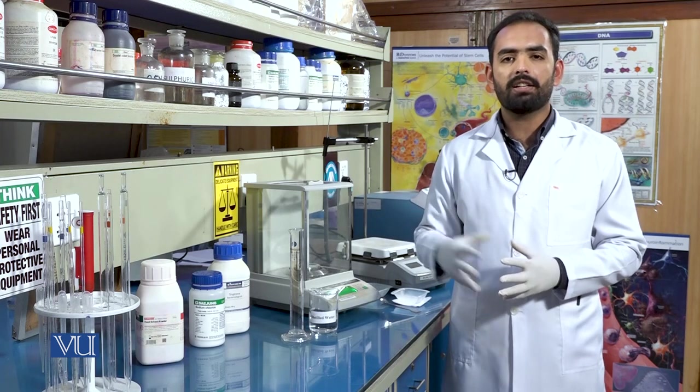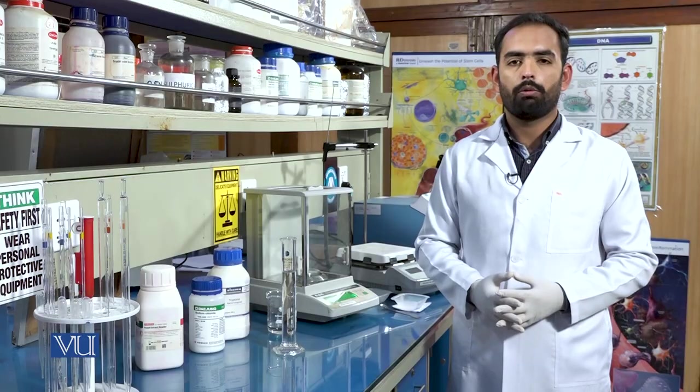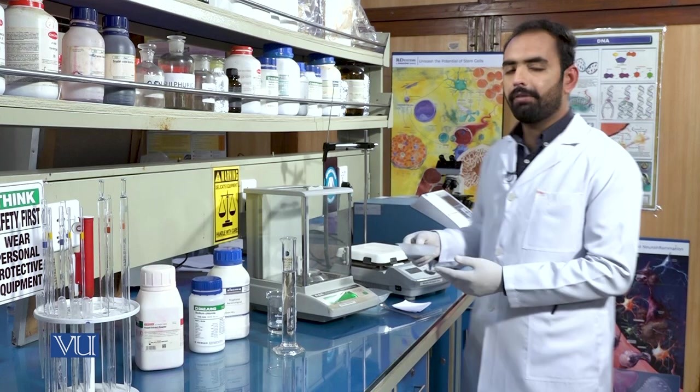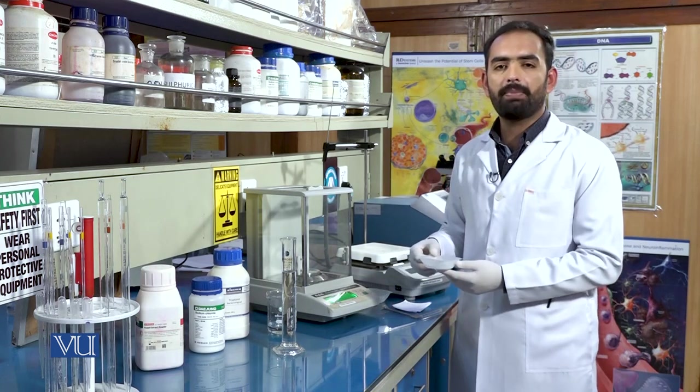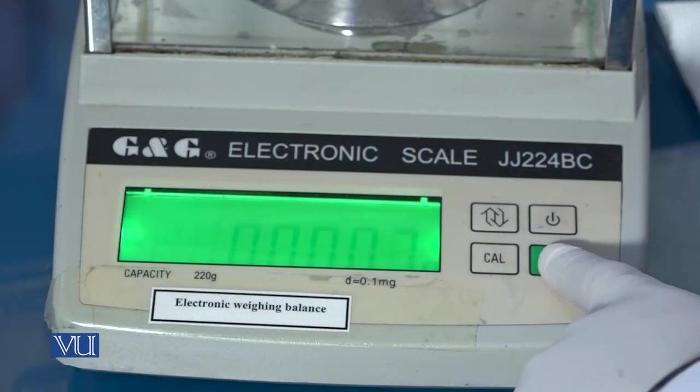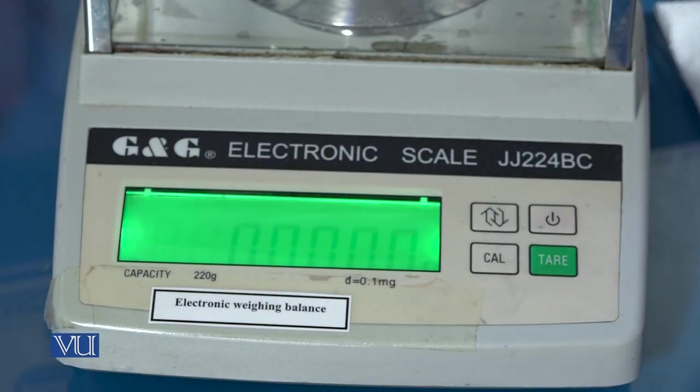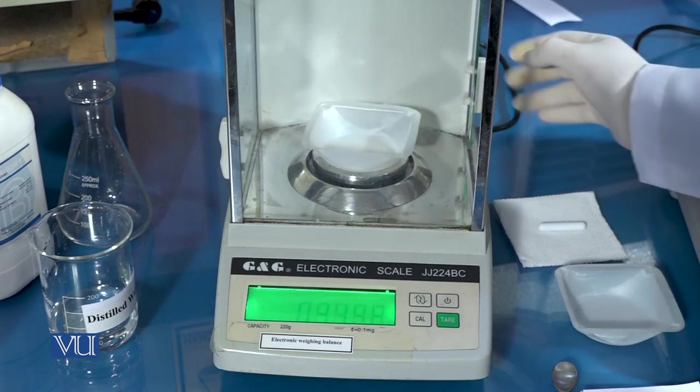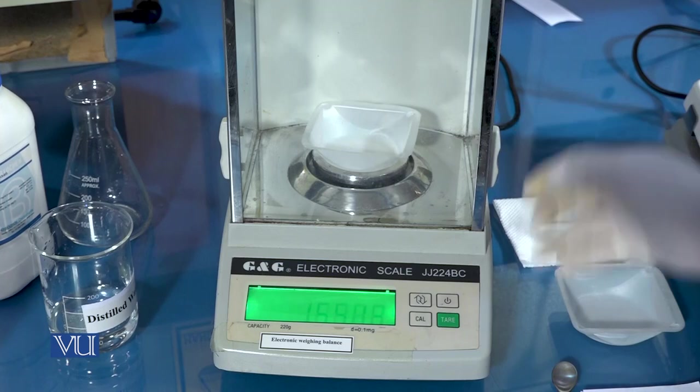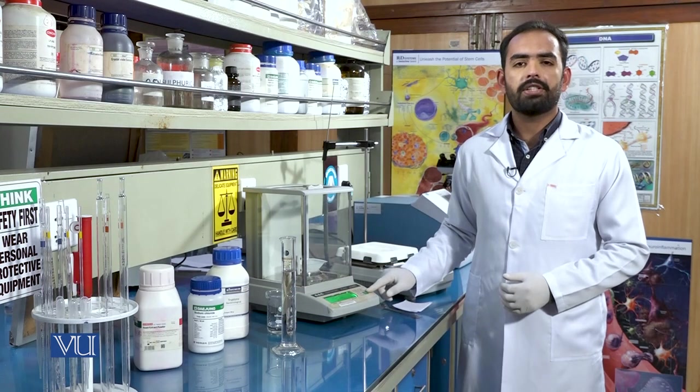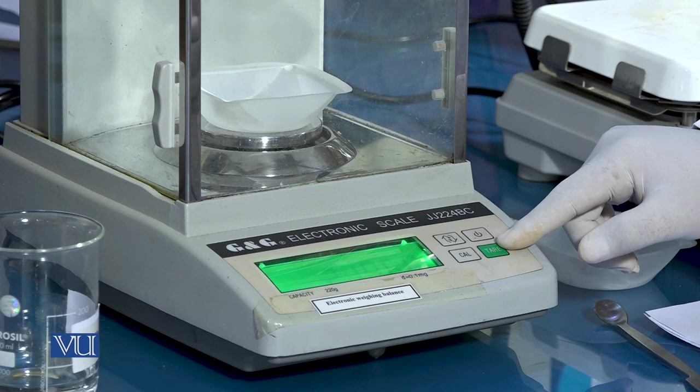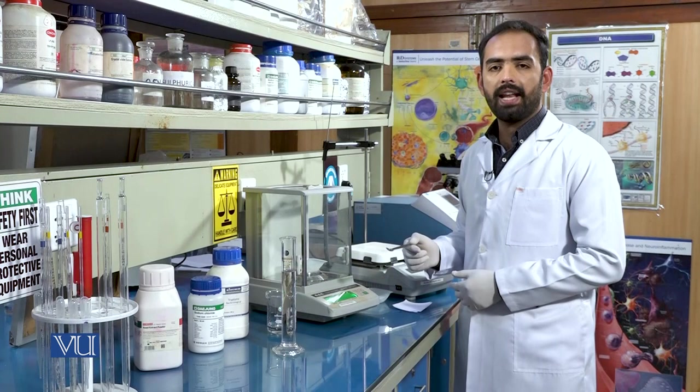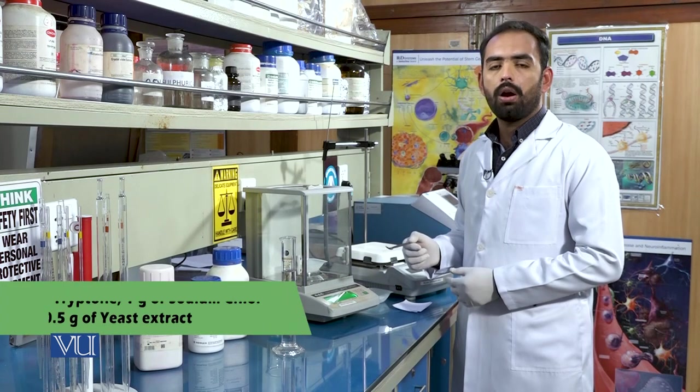For the next step we need an analytical weighing balance. Place the weigh board onto the balance pan. Press the tare key to zero out the weighing board.